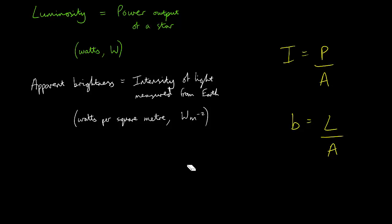So this gives us our final equation. Brightness equals luminosity divided by 4 pi multiplied by the distance to the star squared. 4 pi r squared, of course, is the surface area of a sphere.